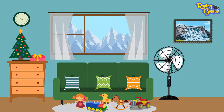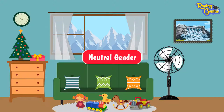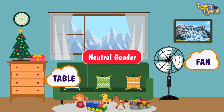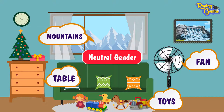All things belong to neutral gender. They are neither masculine nor feminine. For example, table, fan, toys, mountains, dam are all neutral in gender.